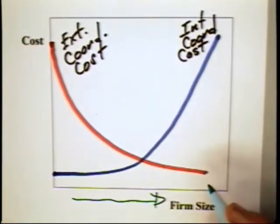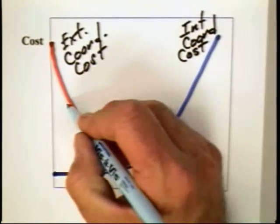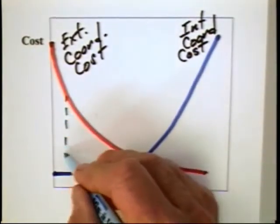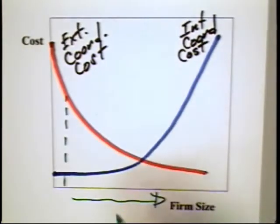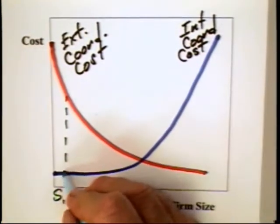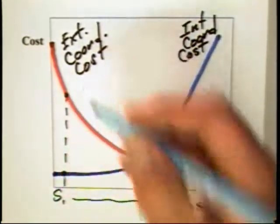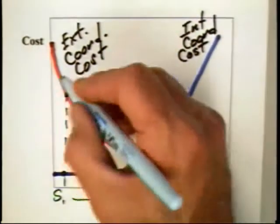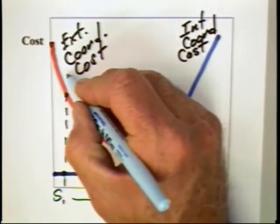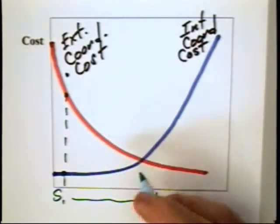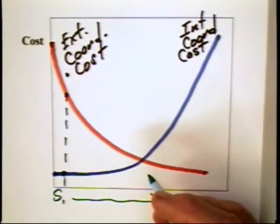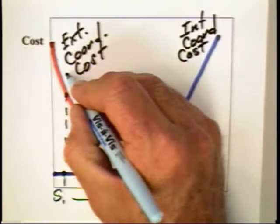Now we can show that by simply considering what the total cost will be when the size of the firm is S1. It will have an internal coordinating cost equal to that because there are a few principal agency problems. It will have an external coordinating cost equal to that or it will have a total cost from these two cost sources equal to this point here.